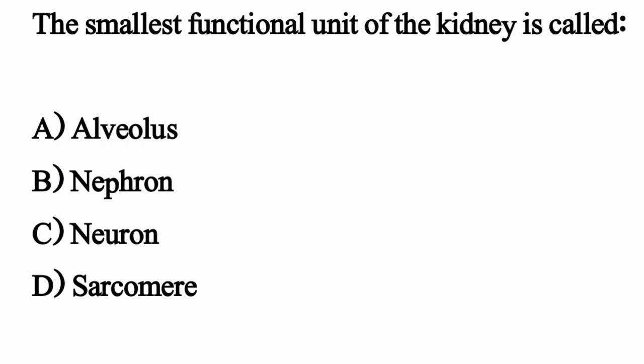The smallest functional unit of the kidney is called — the correct option is Option B: Nephron.